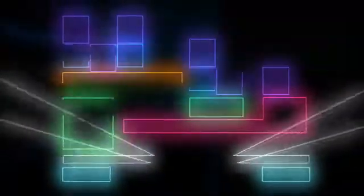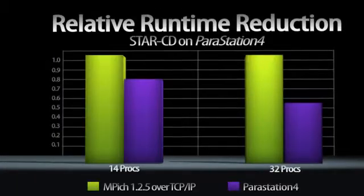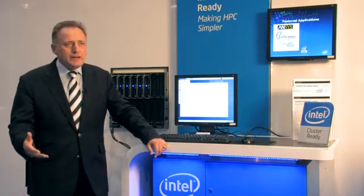Parastation is on top of the normal operating system of the compute nodes. So it allows you to communicate in a very performant, in a very fast way, to give the data fast from one node to the other, make it very stable, easy to handle.